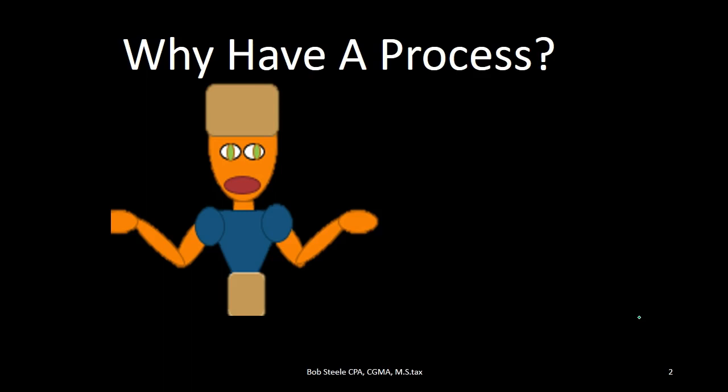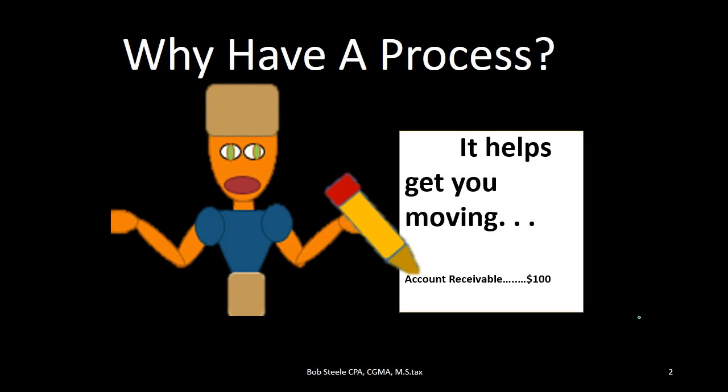Why would we have a thought process? If we fully understand each adjusting journal entry, possibly we don't need one. But I'm going to argue for a thought process for a few different reasons. One is that it's really going to help us get going. If we don't understand the process it'll help us get started. Oftentimes when first learning something, the biggest problem is not knowing where to go further — a process will help us get moving, and once we get moving we can understand better what we're doing.